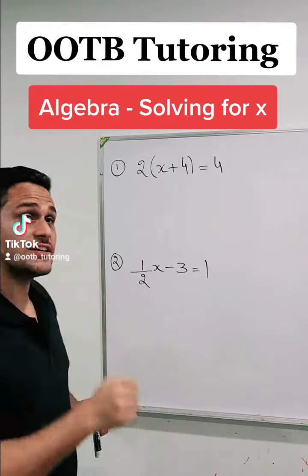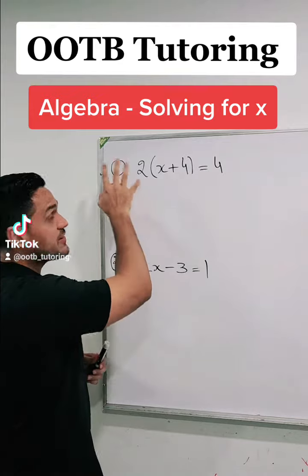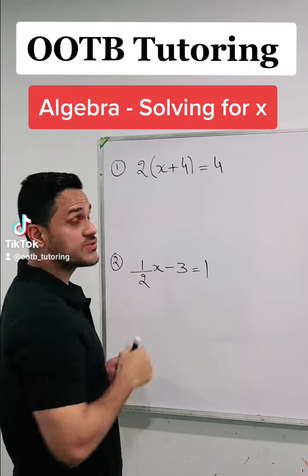Hi everyone! Let's learn how to solve for x in these equations. In the first equation we have 2(x + 4) = 4.